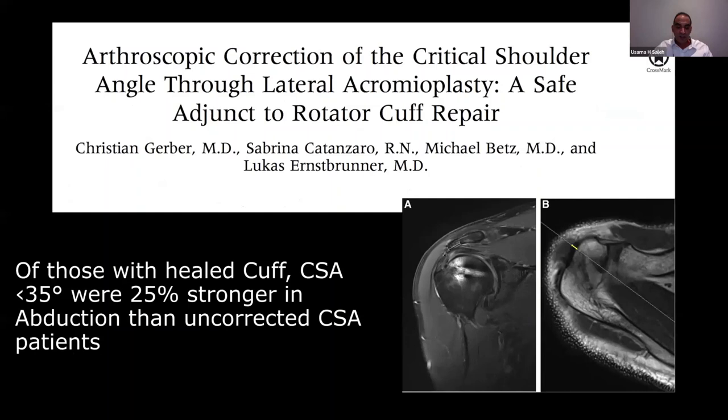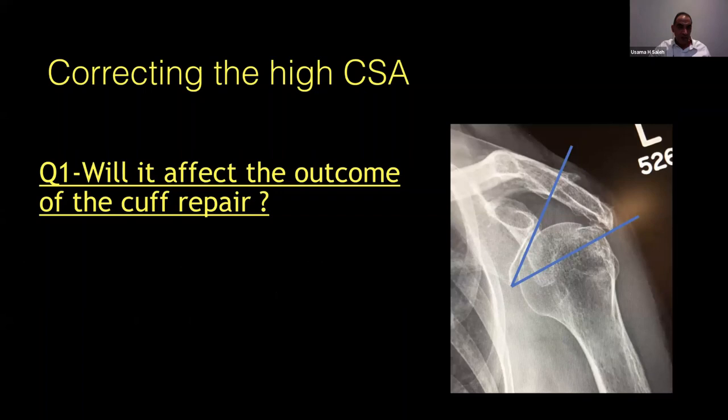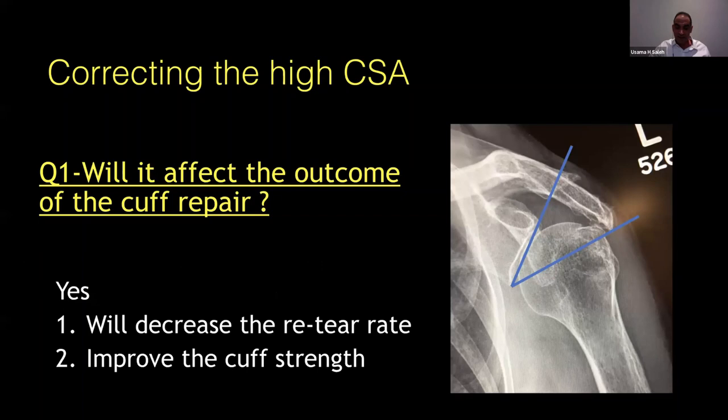It's not only the retear rate — it also affects cuff strength after healing. Another study from Christian Gerber showed that patients with a corrected critical shoulder angle below 35 degrees had 25% stronger abduction compared to patients with an uncorrected critical shoulder angle. So correcting the critical shoulder angle decreases retear rate and improves cuff strength.